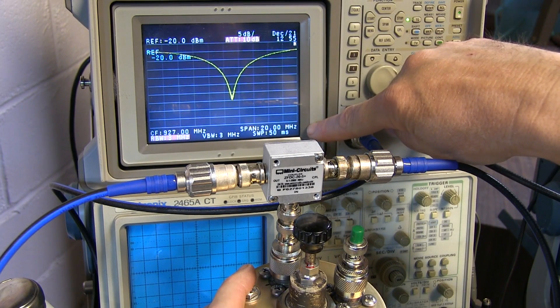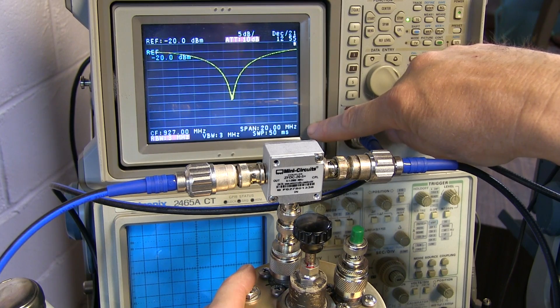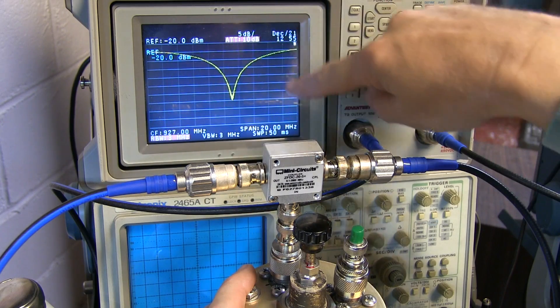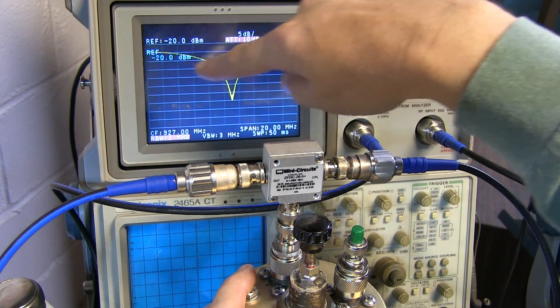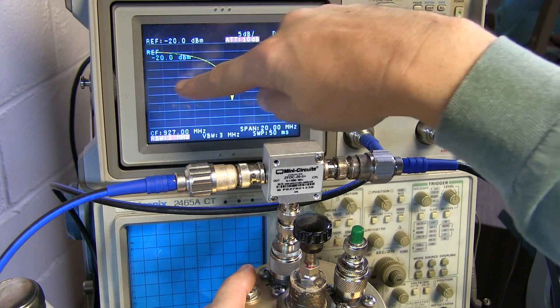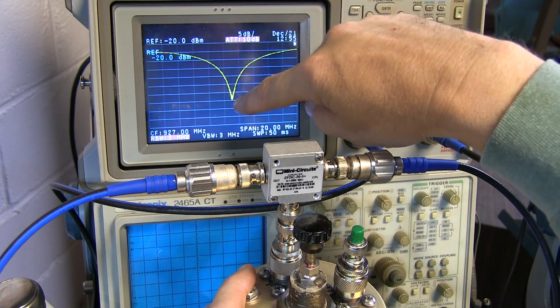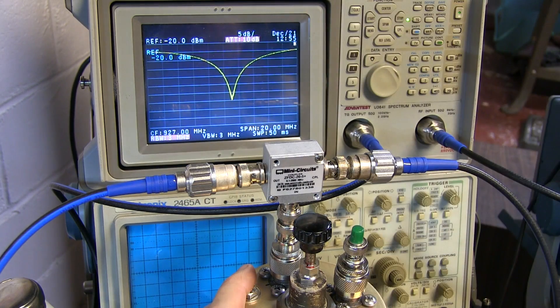This is the same 20 MHz span that I showed earlier with the transmission loss measurement that had the very shallow filter response. It would be very difficult to see where the actual center frequency of the filter is because it was so shallow. It's very easy to see where that center frequency is now because of the very distinct peak here in the return loss plot.